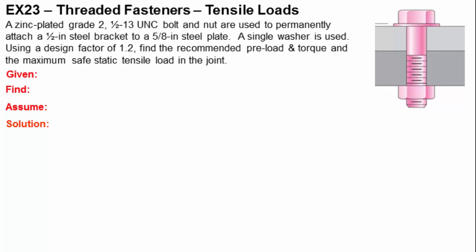This is an analysis example of threaded fasteners looking at tensile loads. In this case, a zinc-plated grade 2 1.5-13 UNC bolt and nut are used to permanently attach a 1.5-inch steel bracket to a 5.8-inch steel plate using a single washer under the head of the bolt.